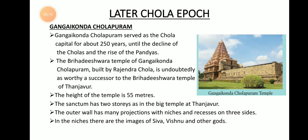The next important temple is Gangaikonda Cholapuram, which was the capital city of the Chola Empire for nearly 200 years. After about 250 years, they were defeated by the Pandyas. The Brihadeeswarar temple in Gangaikonda Cholapuram was built by Rajendra Chola and is equally worthy and important as the Brihadeeswarar temple of Tanjavur. The height of the temple is 55 meters, and the sanctum inside has two stories, like the temple at Tanjavur.